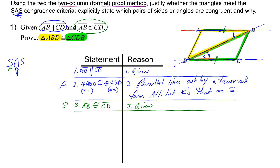Now I need the other side. The side next to angle one is DB, and looking at angle two, the other side is also DB. Both triangles — the yellow and the green — share line segment DB. From our previous work on drawing conclusions, when two figures share the same segment, that's the Reflexive Property. So DB is congruent to DB, and the reason is the Reflexive Property.